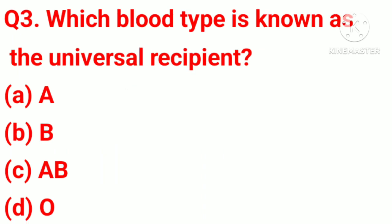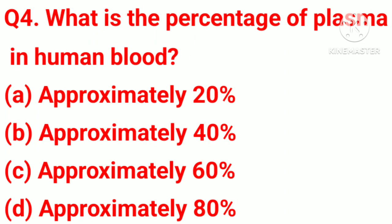Question number 3. Which blood type is known as the universal recipient? Option A, A. Option B, B. Option C, AB. Option D, O. Correct answer: Option C, AB.